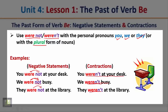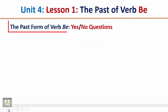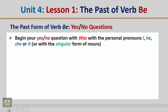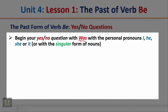'They weren't at the library.' The past form of verb be — yes/no questions. Begin your yes/no question with 'was' with the personal pronouns I, he, she, it, or with the singular form of nouns. Start the question with the verb 'was' plus the subject — I, he, she, or it — and then complete your question.